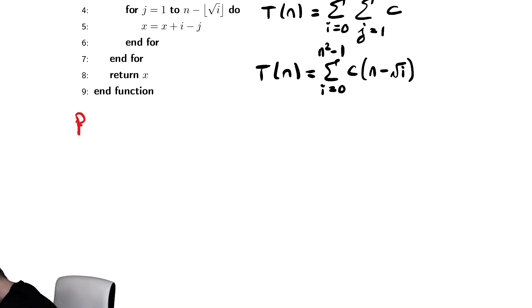Bound above. To bound this above, we again start by writing down the summation as given. It starts at 0 to n squared minus 1 of c times n minus radical i.